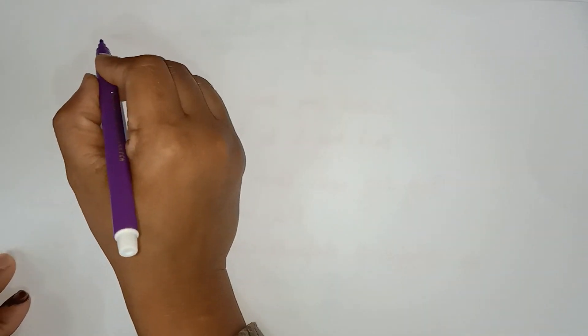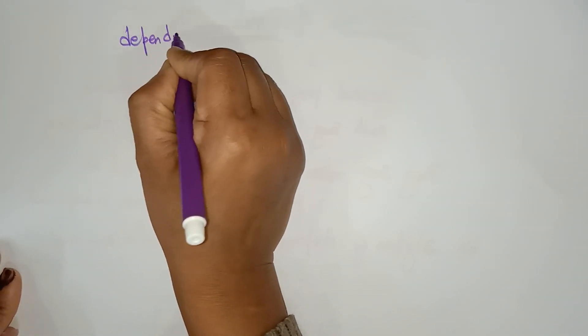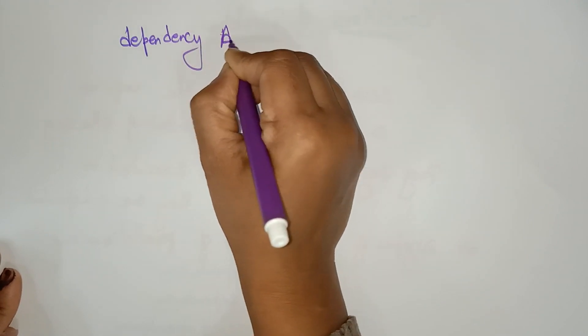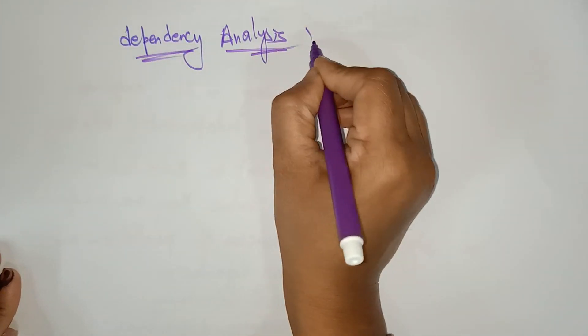Before going into the three types of dependency parallelism, in this video I want to give clarity on what dependency analysis is. First, if you understand what exactly dependency analysis is, then you can work on the three different types of dependencies. Let me explain dependency analysis. One segment is dependent on another segment — what does this mean?